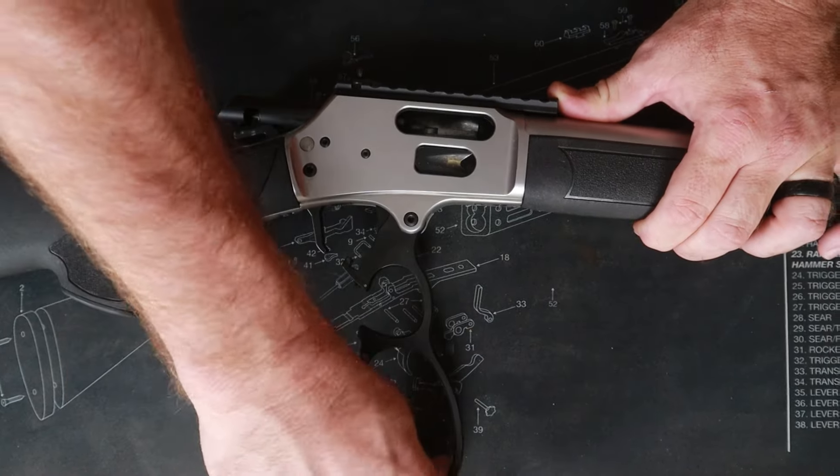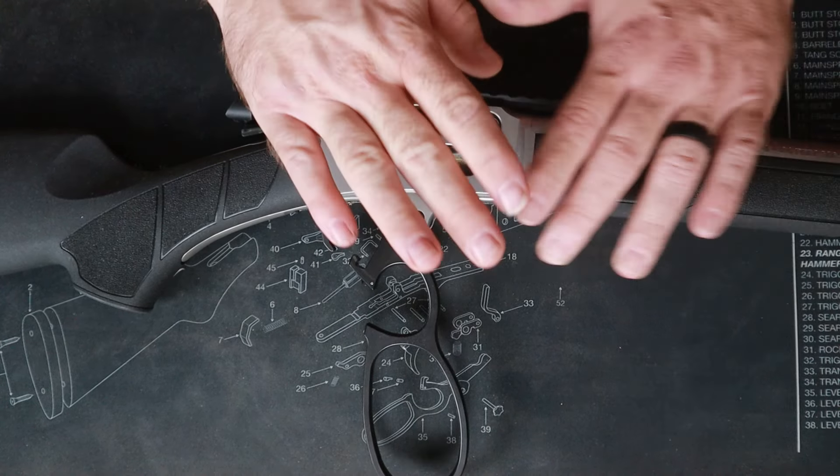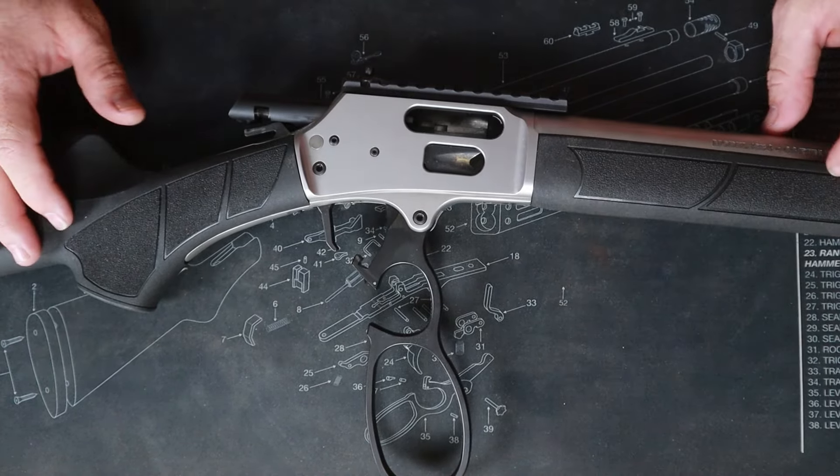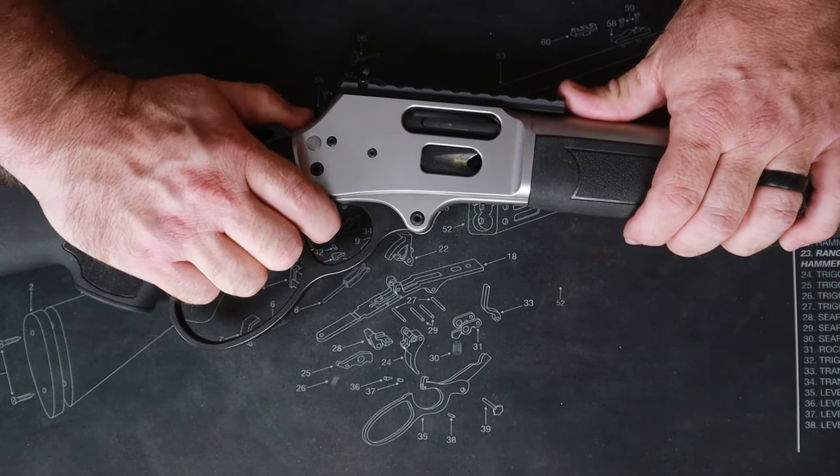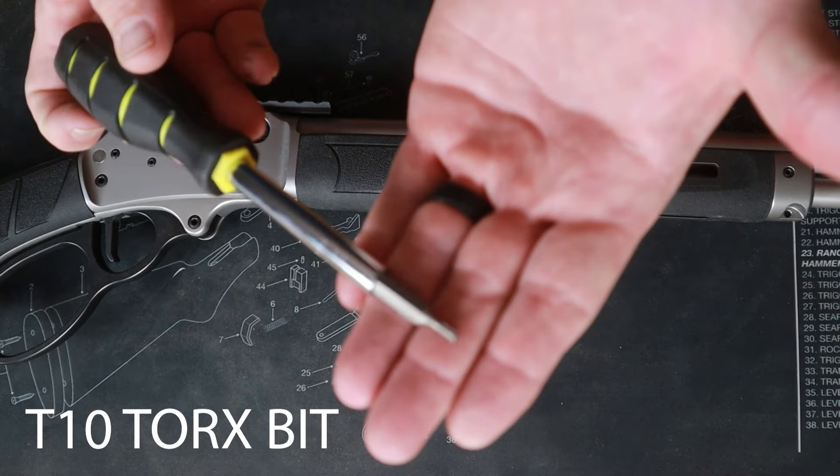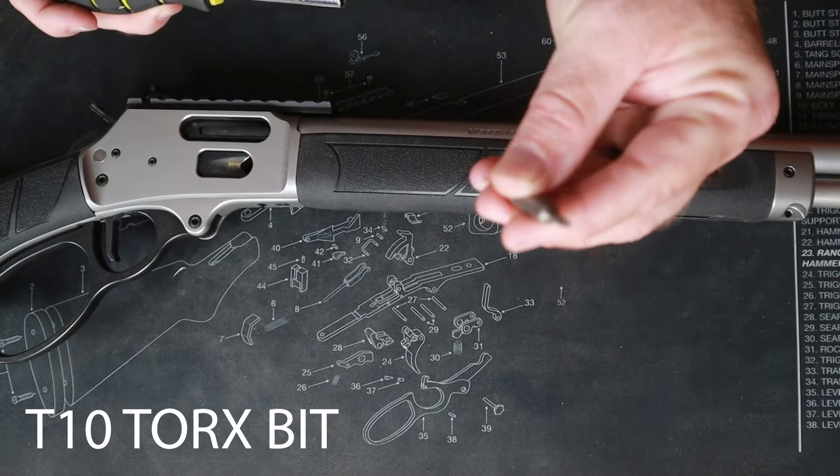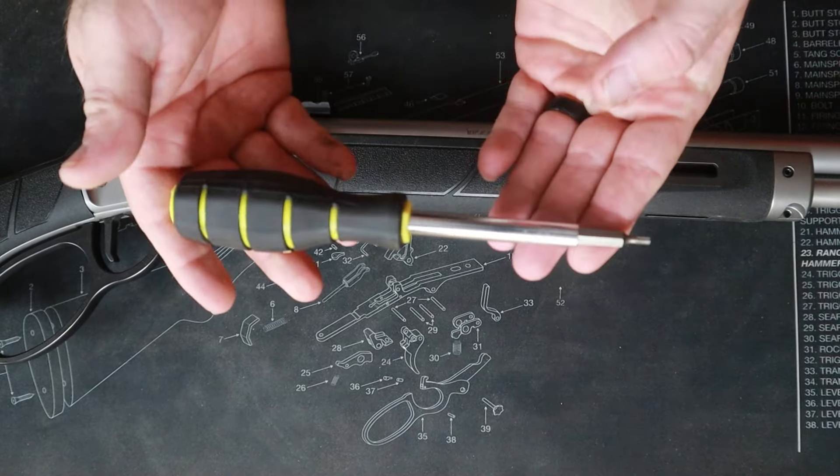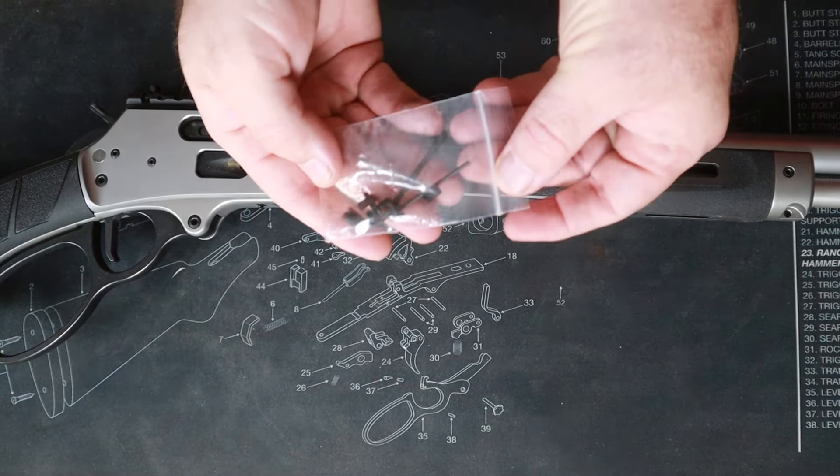The first thing we're going to do is open the action and visibly and physically check for ammunition. There's not going to be any ammunition on our workbench. We owe that to ourselves and others around us. For tools, it's very simple. You're going to need a T10 torx bit, whether it's a bit like this, a devoted screwdriver, or whatever, and then the rest of the tools are in the hardware baggie.